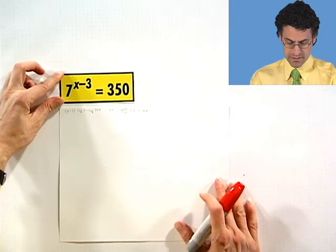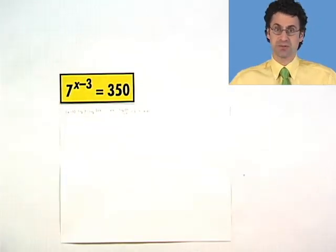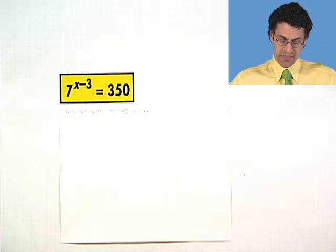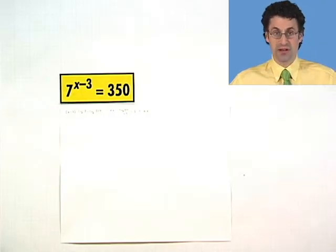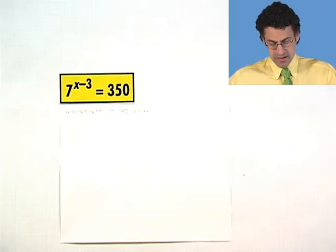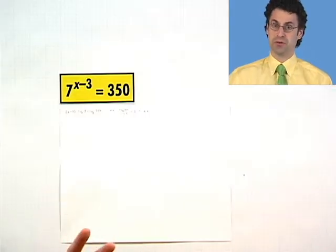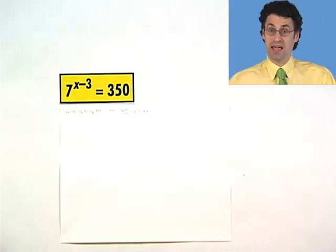So here's a crazy little example. I've got 7 raised to the x minus 3 power and that's supposed to equal 350. So how am I going to possibly do this? Well, maybe there's a way of writing 350 as 7 to a power but off the top of my head I don't know it.